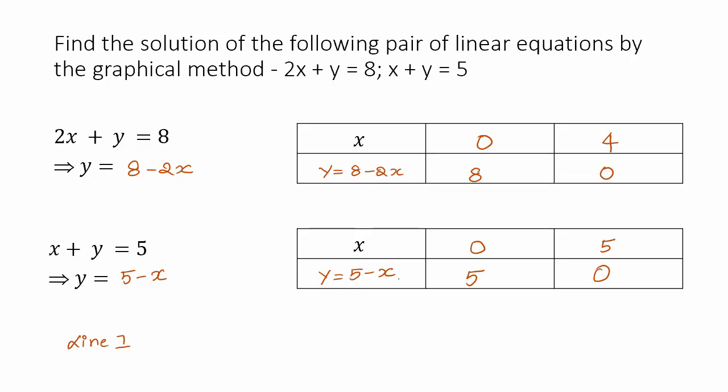So for line 1, we have points (0,8) and (4,0). For line 2, we have points (0,5) and (5,0). Now that we have two points for each of the lines, each of the equations, let us plot.